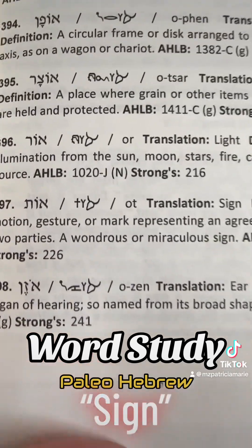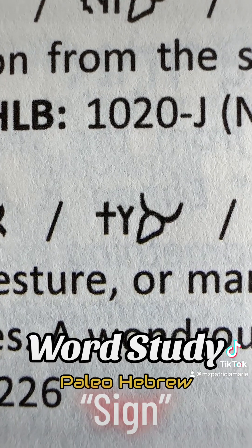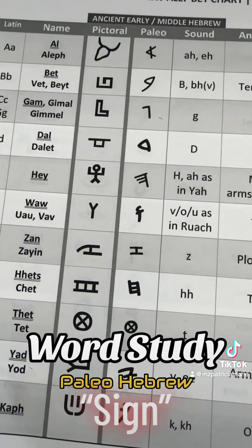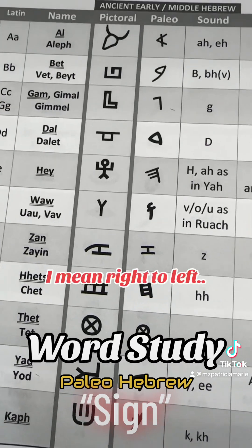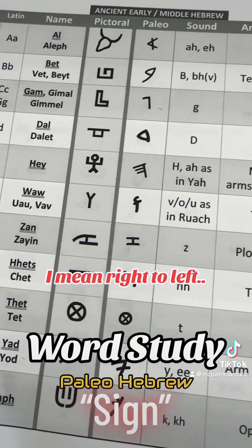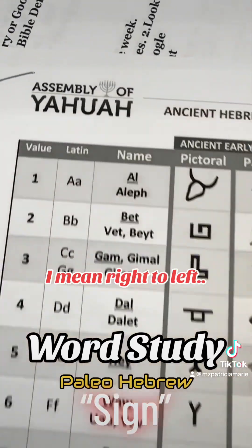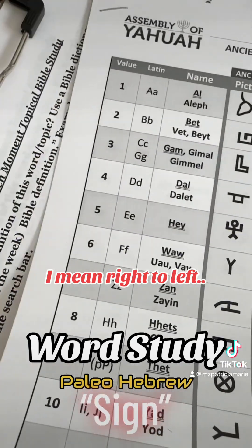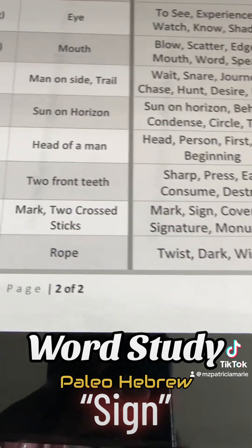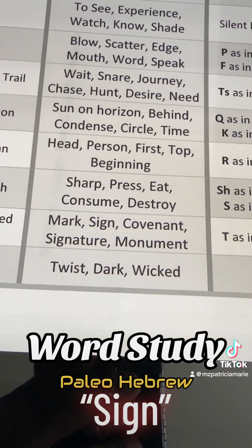It gives a definition. The cool thing I'll focus on is the Paleo-Hebrew symbols: cross, Y, bullhead. I got this from Assembly of Yahuwah — you can print it out for free. The cross means a mark, two crossed sticks. The meaning is: mark, sign, covenant, signature, a monument.